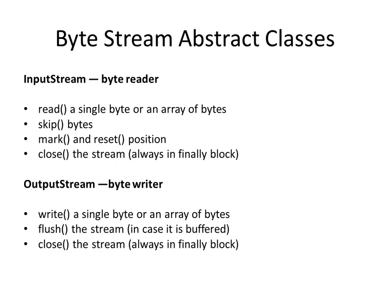For the byte stream abstract classes, you have InputStream as the byte reader and OutputStream as the byte writer. The important methods are: read, which reads a single byte; write, which writes a single byte; skip, which skips a specified number of bytes; and close, which closes the stream. You should always close the stream in a finally block because close itself can throw an exception.